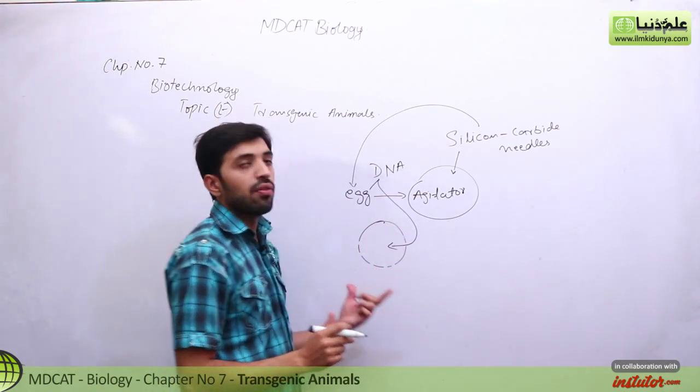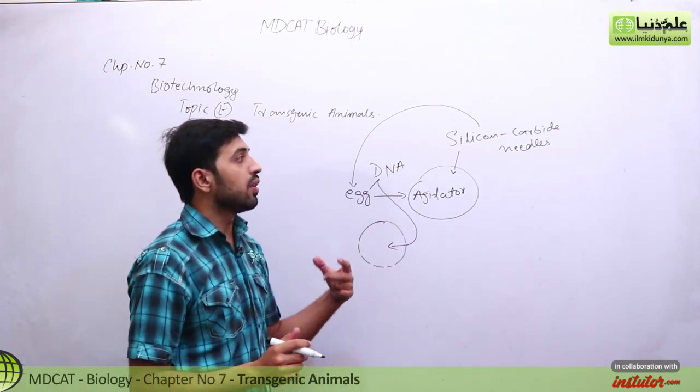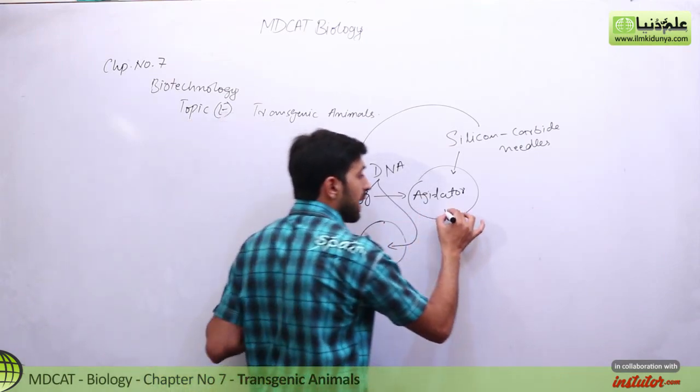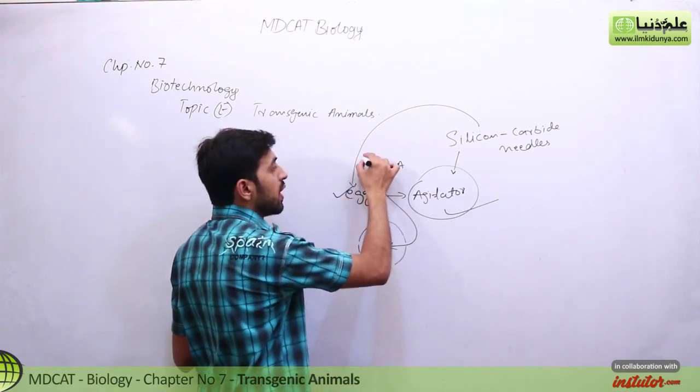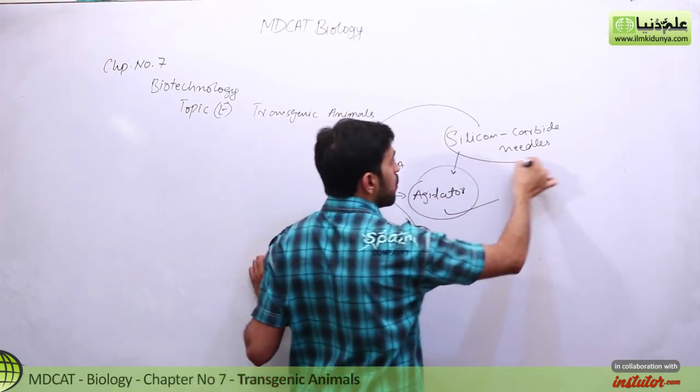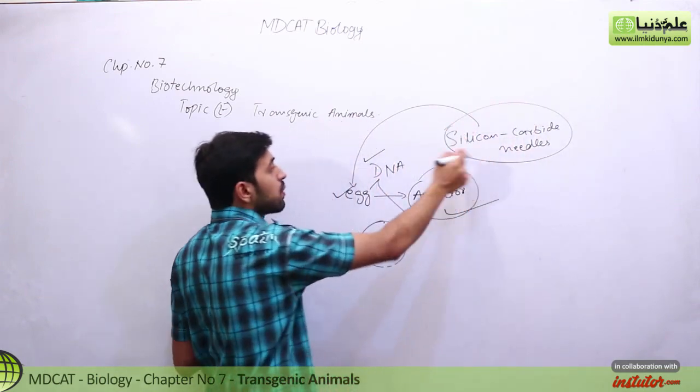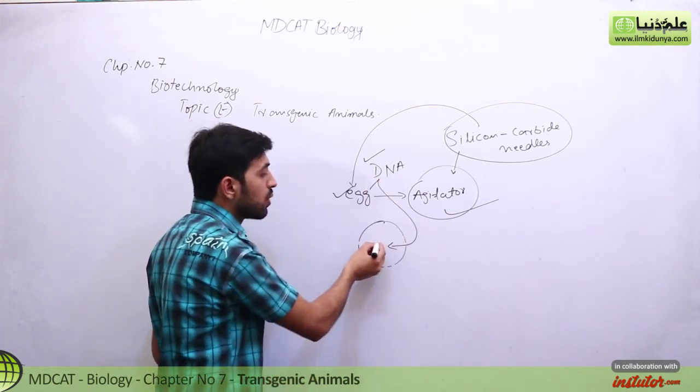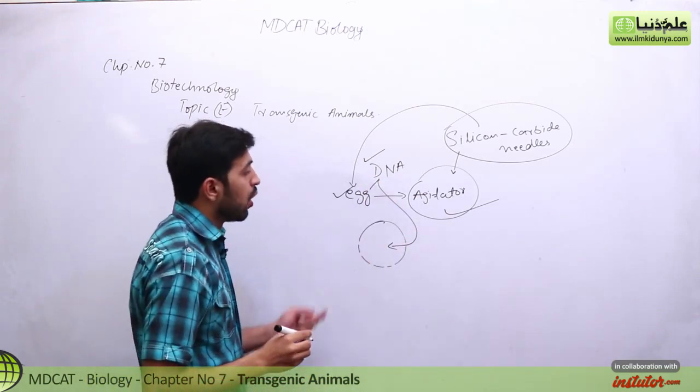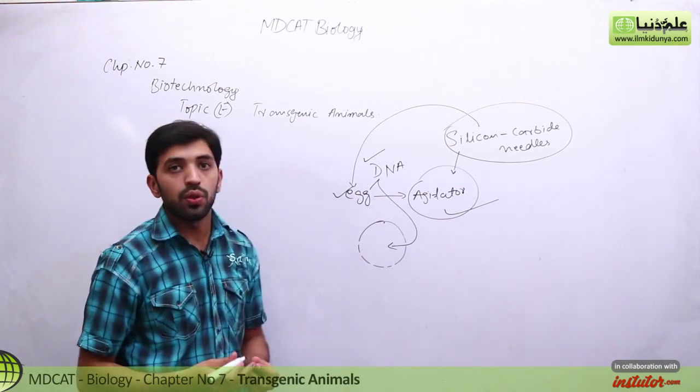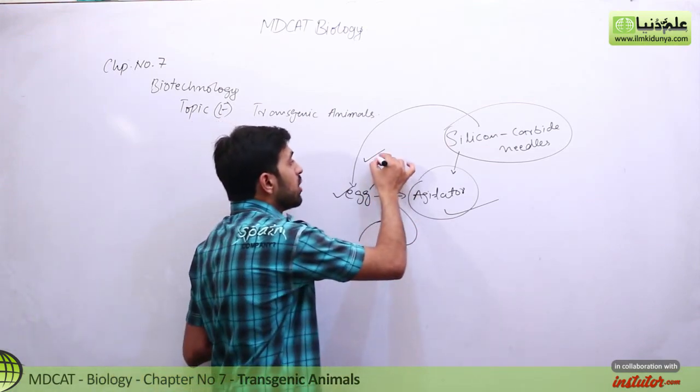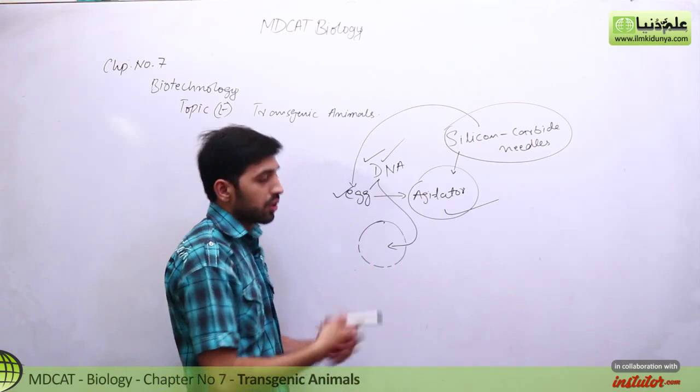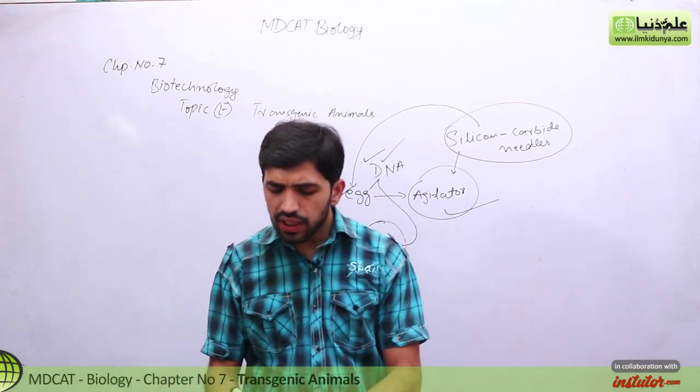This is our method called vortex method. When micro injection is different in that we can perform it by hand, we use an agitator in which we place the egg and the DNA, and what is called silicon carbide needles. These needles create tiny holes in the egg membrane, allowing DNA to enter the cell, and then further fertilization occurs to obtain new products with the desired DNA.